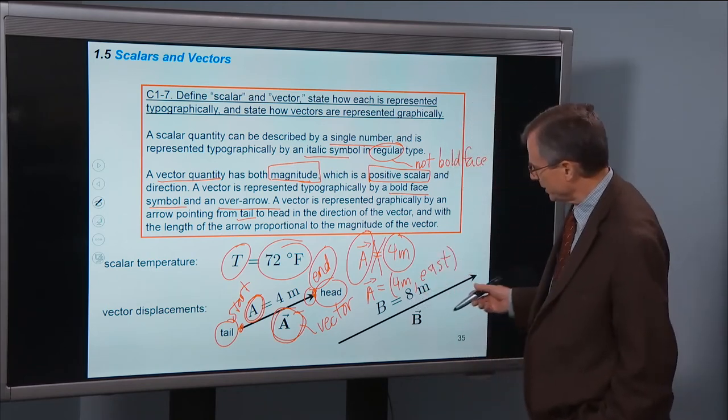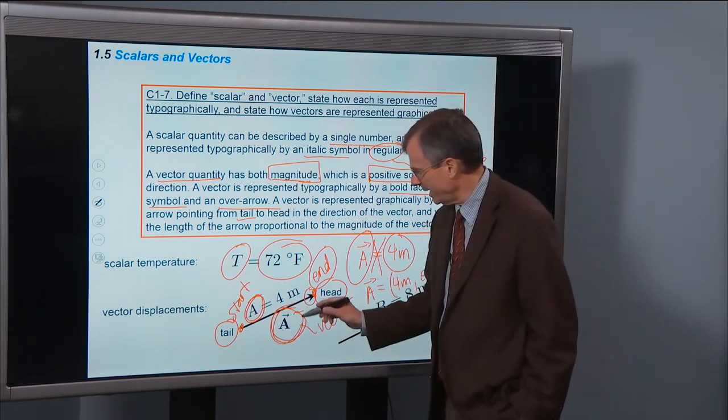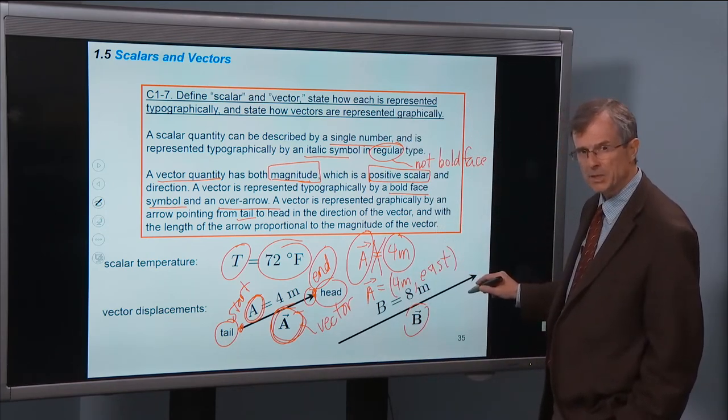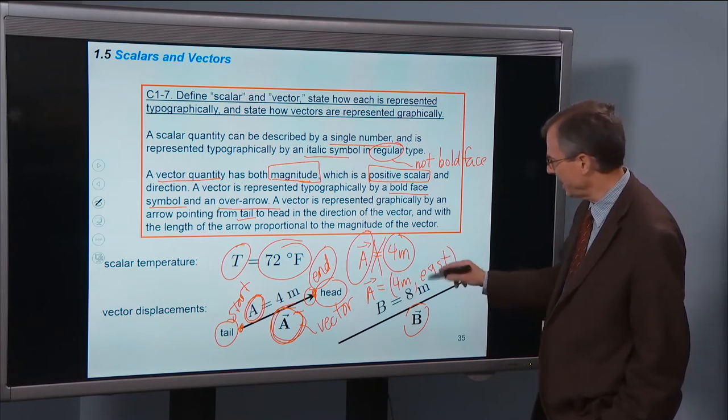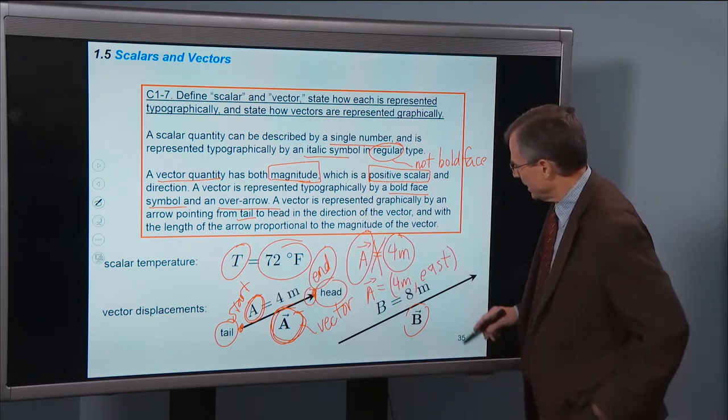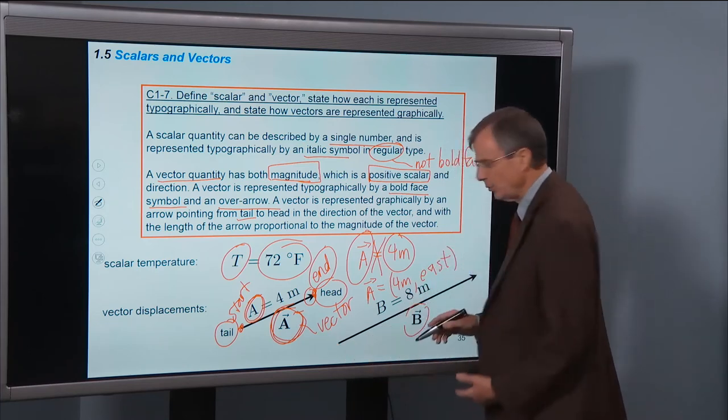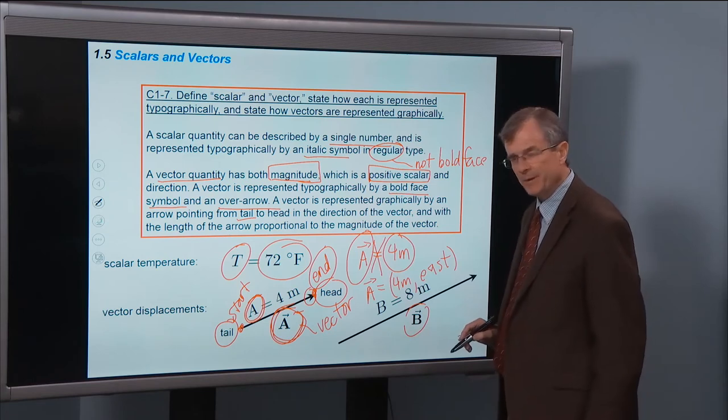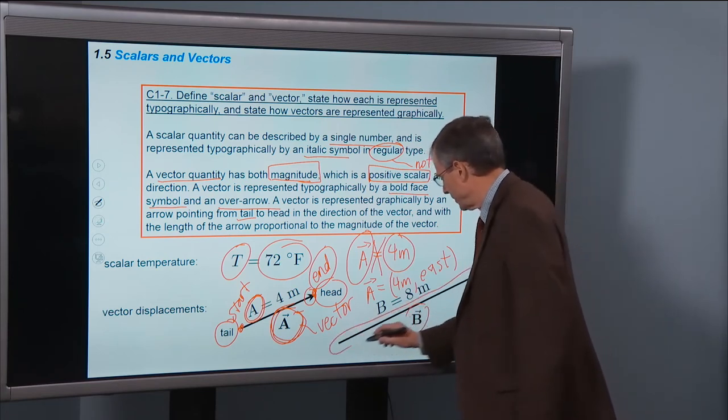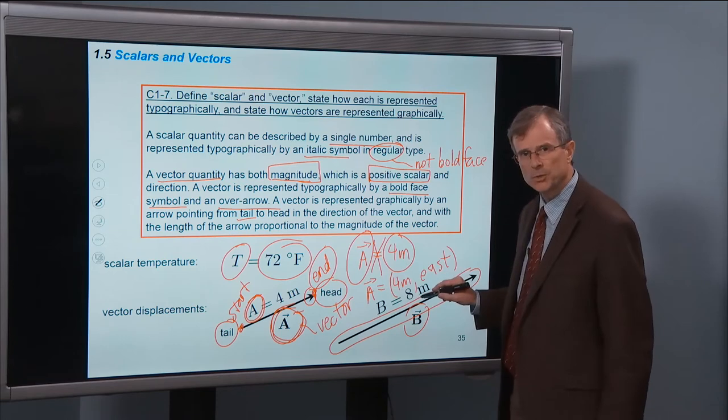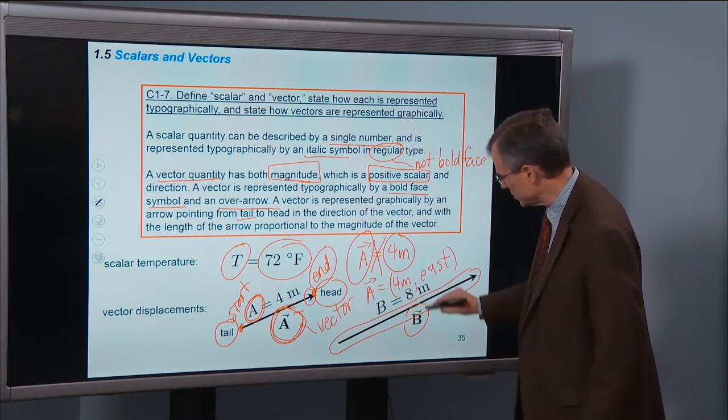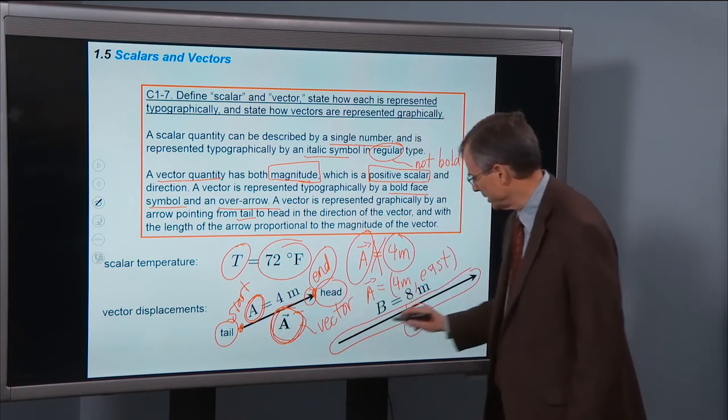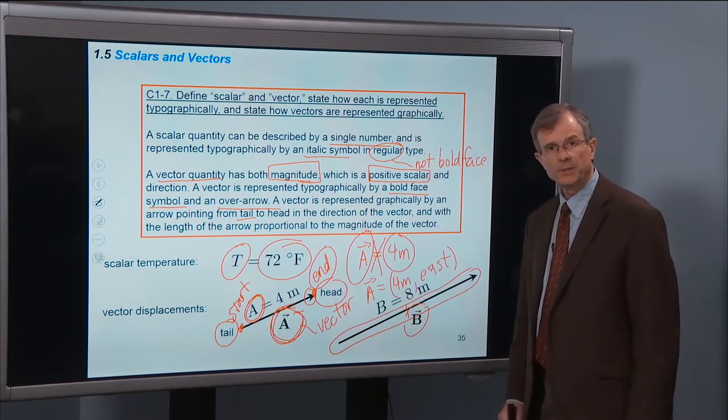Pointed in the direction of the vector and with the length of the arrow proportional to the magnitude of the vector. So if we have two different displacements, displacement A and displacement B, with B having twice the magnitude of A, namely 8 meters versus 4 meters. Then we'll have the length of that arrow that's representing the vector be proportional to the magnitude of the vector. And since this is twice as long as the other one, here's the length of A, 4 meters plus 4 meters would be B.